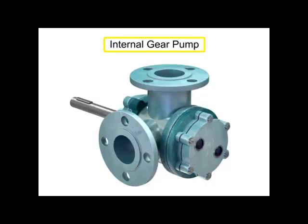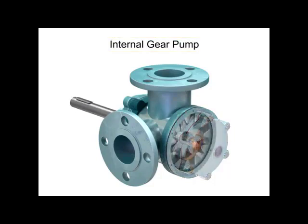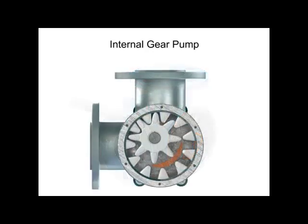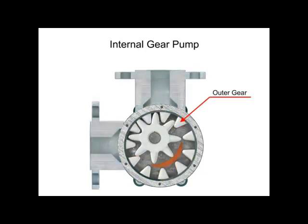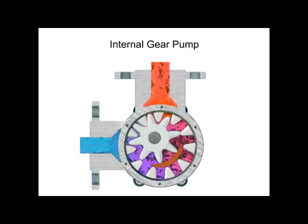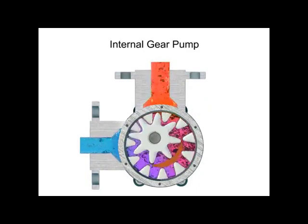Internal gear pumps are exceptionally versatile. This type of pump has one inner gear which is inside a second outer gear. The inner gear has a shaft driven by a motor and has teeth that protrude outward. The outer gear has teeth that protrude inward toward the center of the pump. As the inner gear rotates, it meshes with and moves the outer gear.